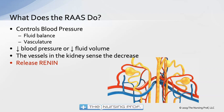It controls blood pressure in a couple of different ways: by maintaining fluid balance and by maintaining our vasculature. The kidneys will sense a drop in blood pressure or a drop in fluid volume, and then the vessels will cause the release of renin. The kidneys sense this and say, blood pressure is low, we need to get that blood pressure up — it releases renin, and renin is going to increase blood pressure.